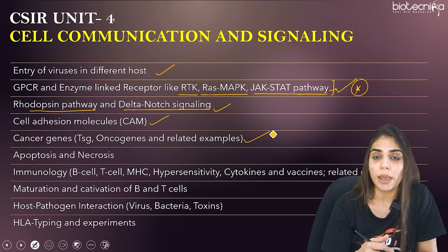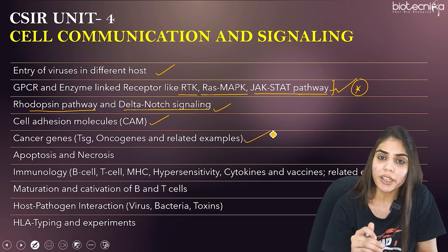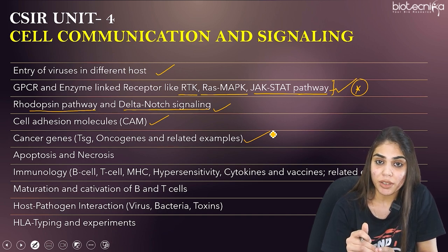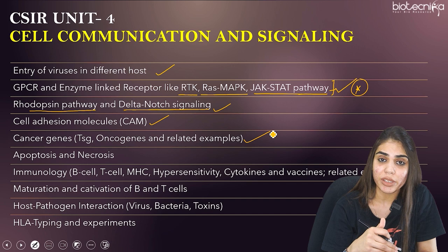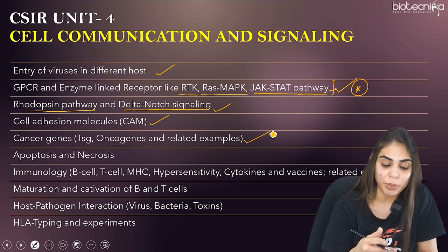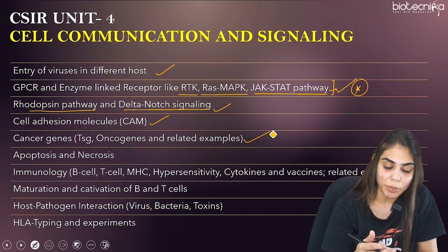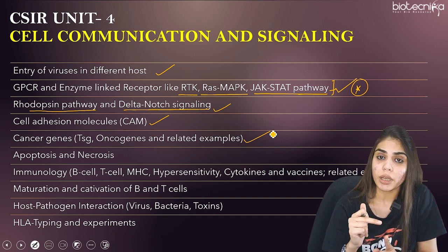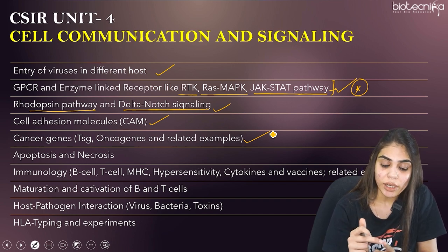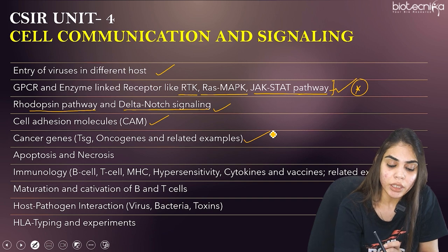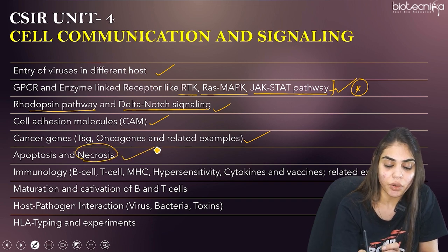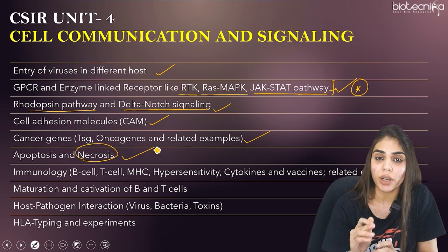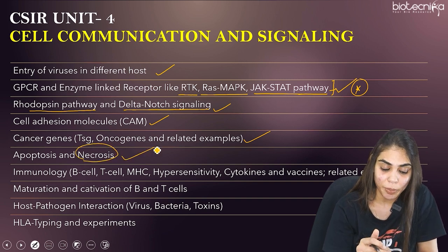The next is apoptosis. Learn the two different pathways — extrinsic and intrinsic mitochondrial pathways. Also learn necrosis alongside apoptosis, as both topics should be studied in parallel.